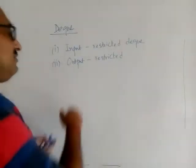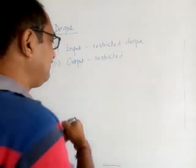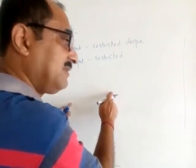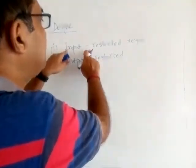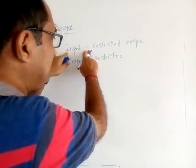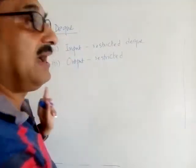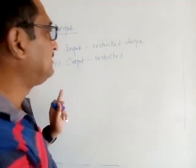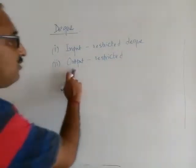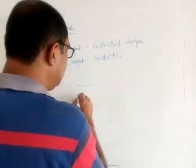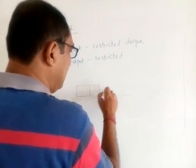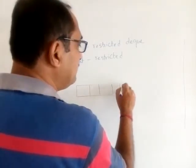To summarize, in Input Restricted DQ, insertion takes place only from the rear end and deletion (removal of elements) can take place from either end. Output Restricted DQ says exactly the opposite: 'output' hints toward removal of an element.